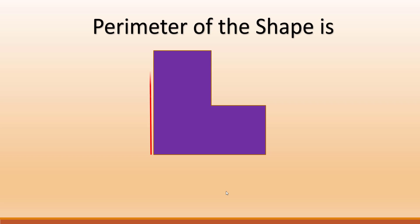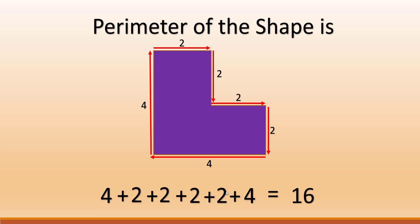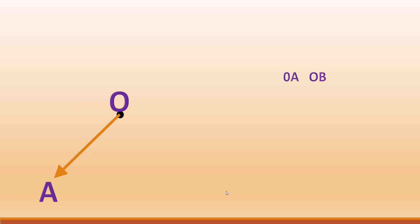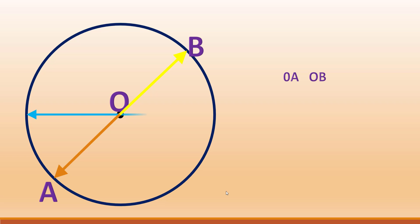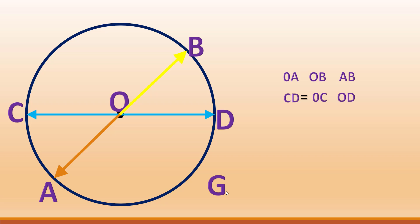The perimeter of the shape: this side is 4, this side is 2, and this side is also 2. The sum of all four sides equals 16. O is the center of the circle. OA and OB are equal to the radius. AB is a chord and also a diameter. CD is also a chord and also a diameter.